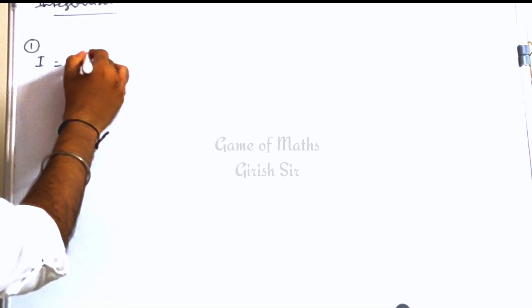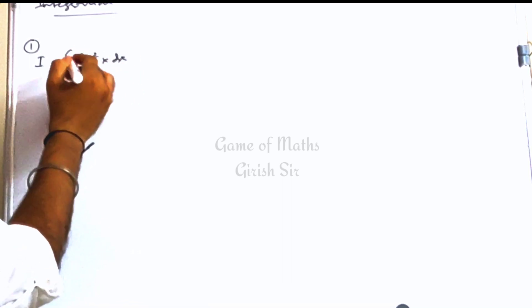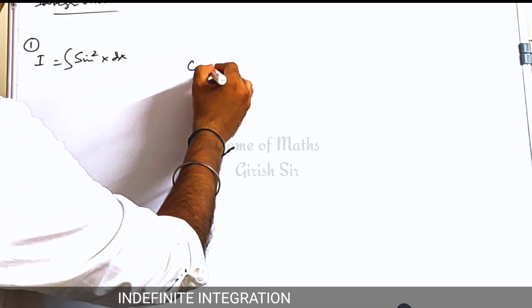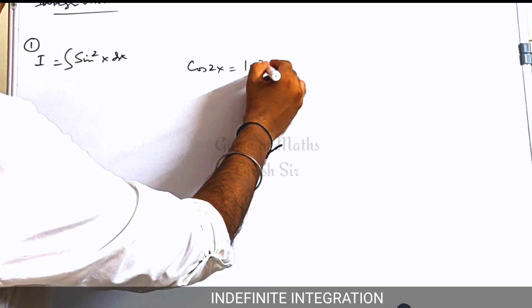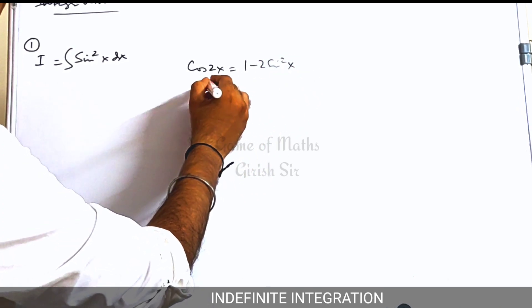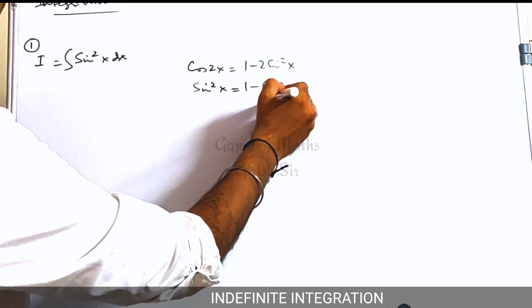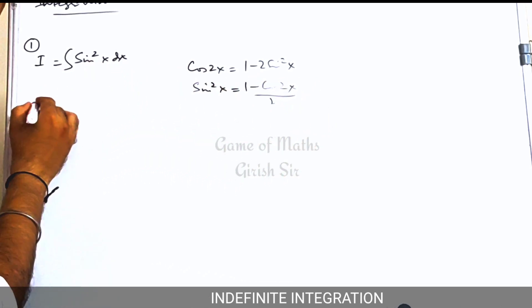Suppose the integral is sin squared x. We must try to make it a linear function. For that, you can use the result cos 2x = 1 minus 2 sin squared x. From here you can write sin squared x as (1 minus cos 2x) divided by 2. I will make this substitution here.